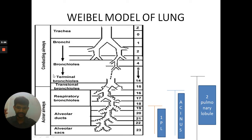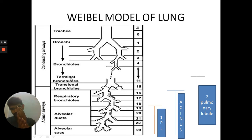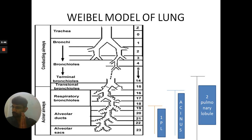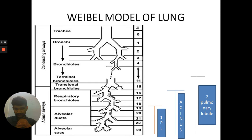What we are interested in here is from the terminal bronchiole to the distal end. The part of the lung including the terminal bronchiole to the alveolar sac is the secondary pulmonary lobule. The part of the lung distal to the terminal bronchiole — meaning excluding the terminal bronchiole, from terminal bronchiole to alveolar sac — is known as the acinus.